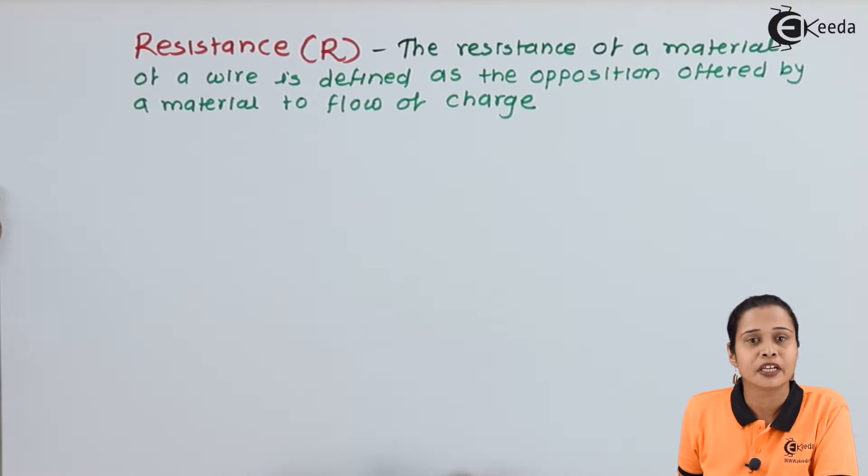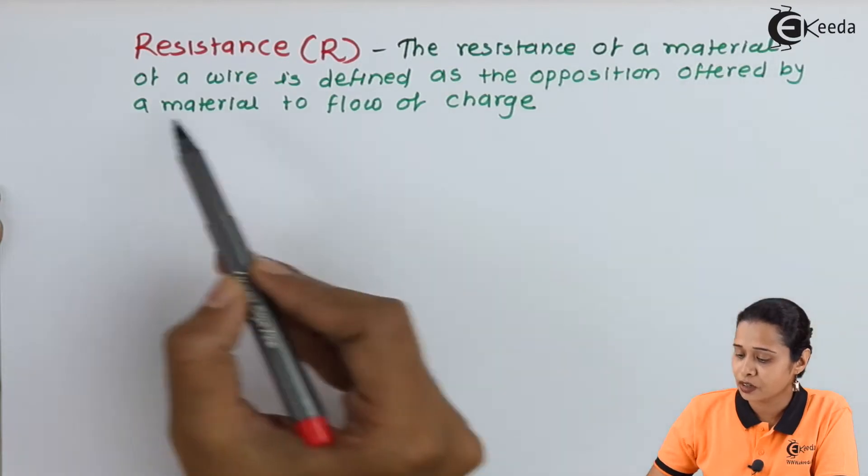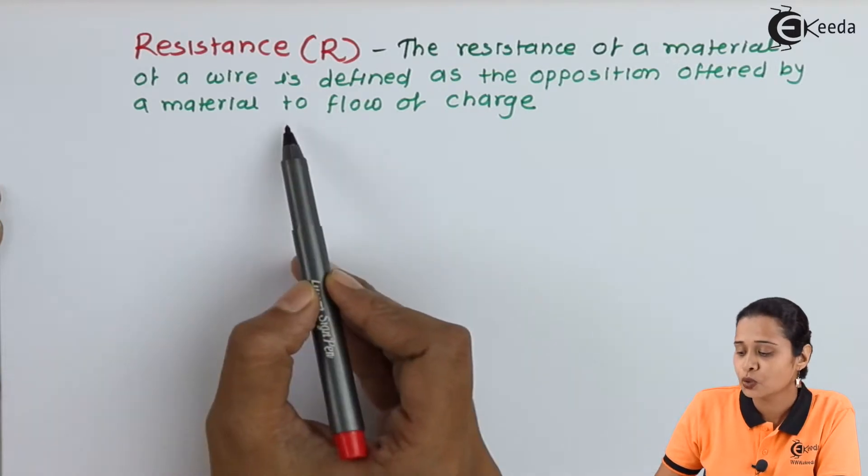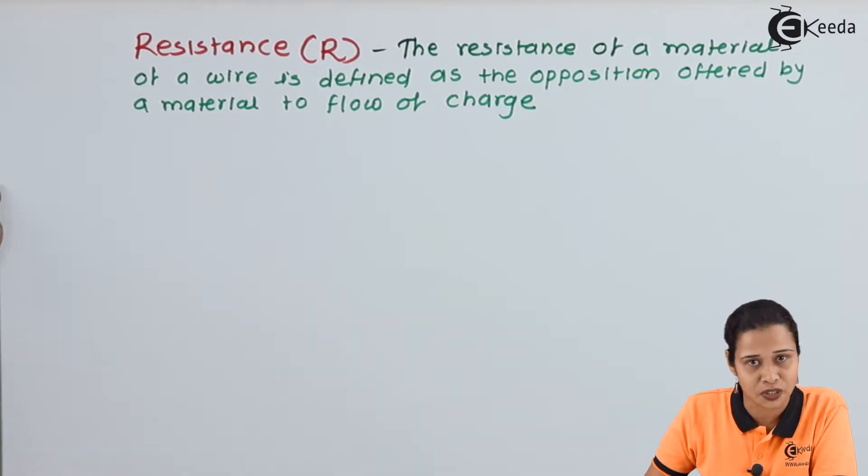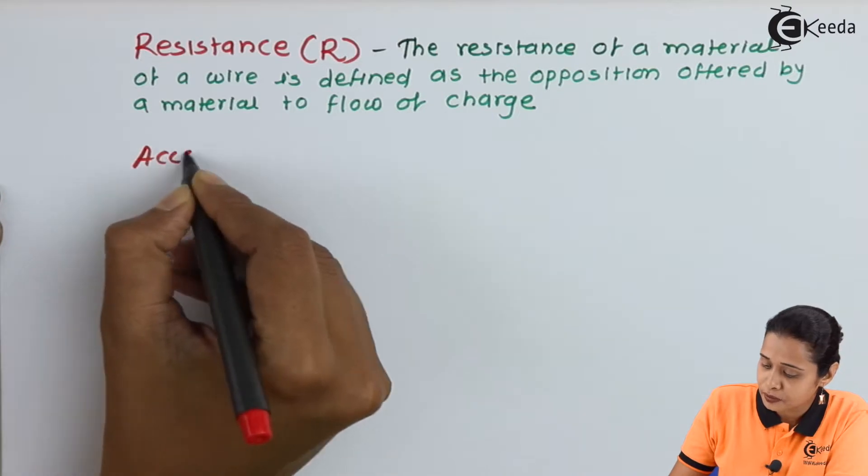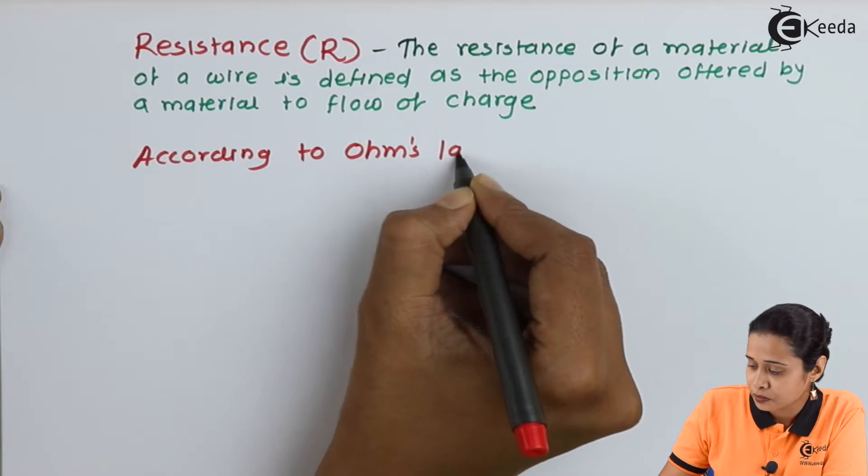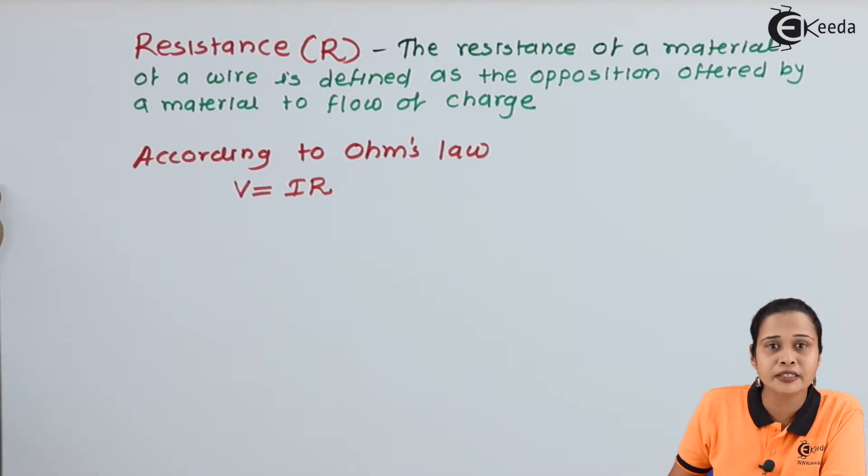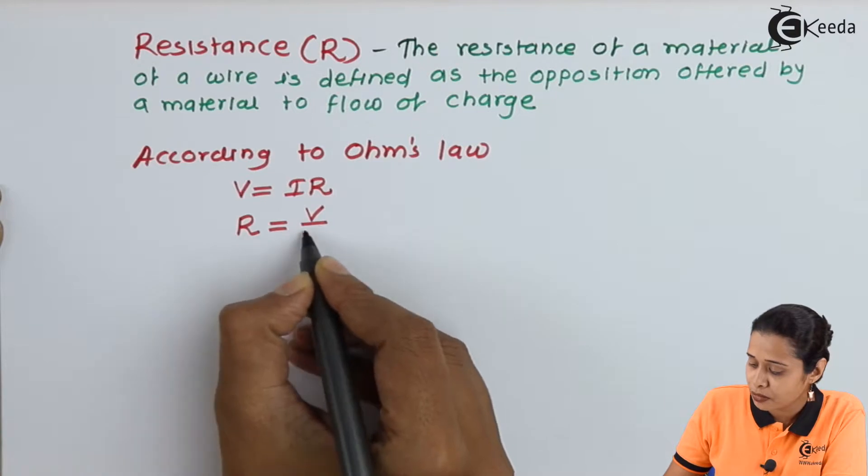Let us start with the definition of resistance. The resistance of a material or wire is defined as opposition offered by the material to the flow of charge. Suppose here we have a metal, then we can say opposition to the flow of electrons. Now, according to Ohm's law, we have V = IR. Hence, resistance can be written as R = V/I.